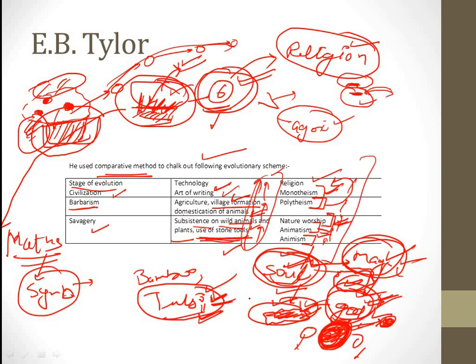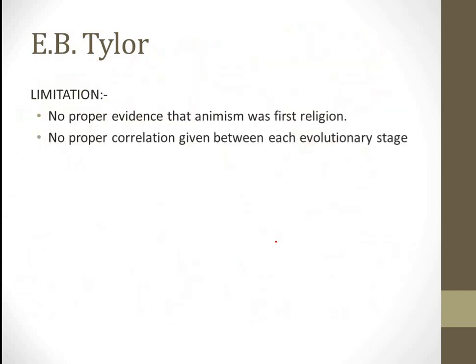This is the scheme of technology and the scheme of religion. First you had stone tools, then hunting-gathering, then agriculture, then the iron age and art of writing. In religion, you have animism, animatism, nature worship, polytheism, monotheism. What are the limitations? The first limitation is there is no proper evidence that animism was the first religion. There is no good evidence that animism was the first religion.